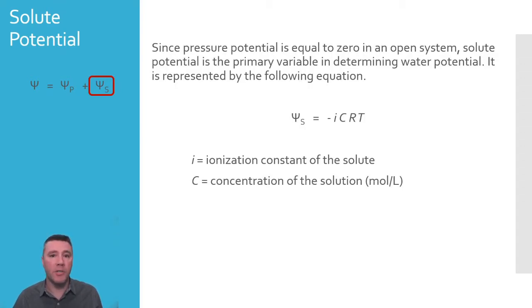R is the pressure constant and will always be 0.0831. Its unit is liter bars per mole Kelvin. And the final variable is temperature.